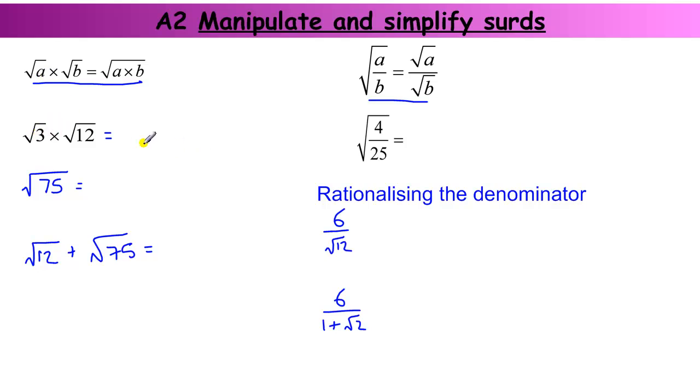So if I start with the square root of three times the square root of twelve, that's equal to the square root of three times twelve, which is the square root of thirty-six, which is just six. So in fact, that doesn't equal a surd, but it simplifies to a nice whole number.